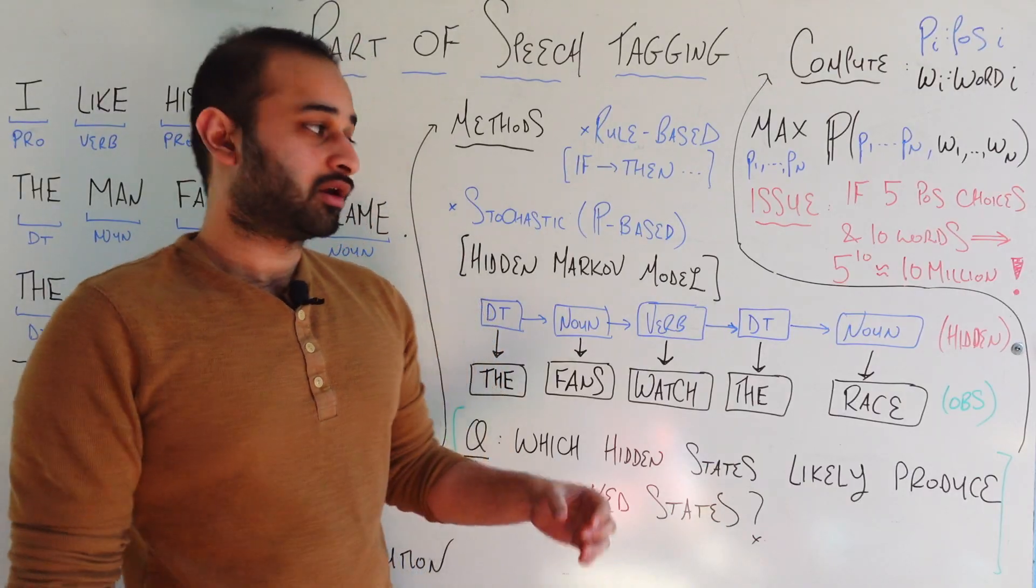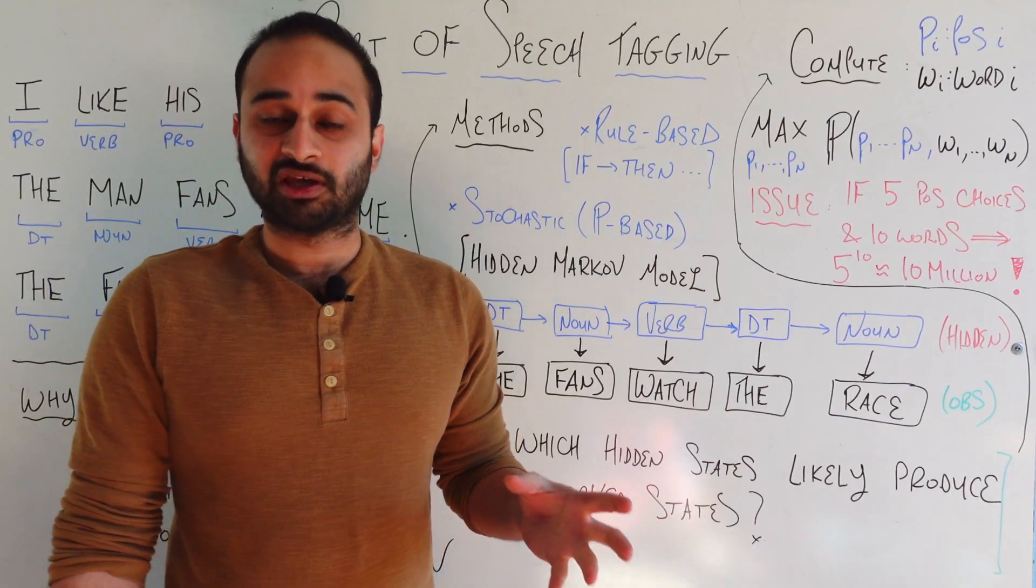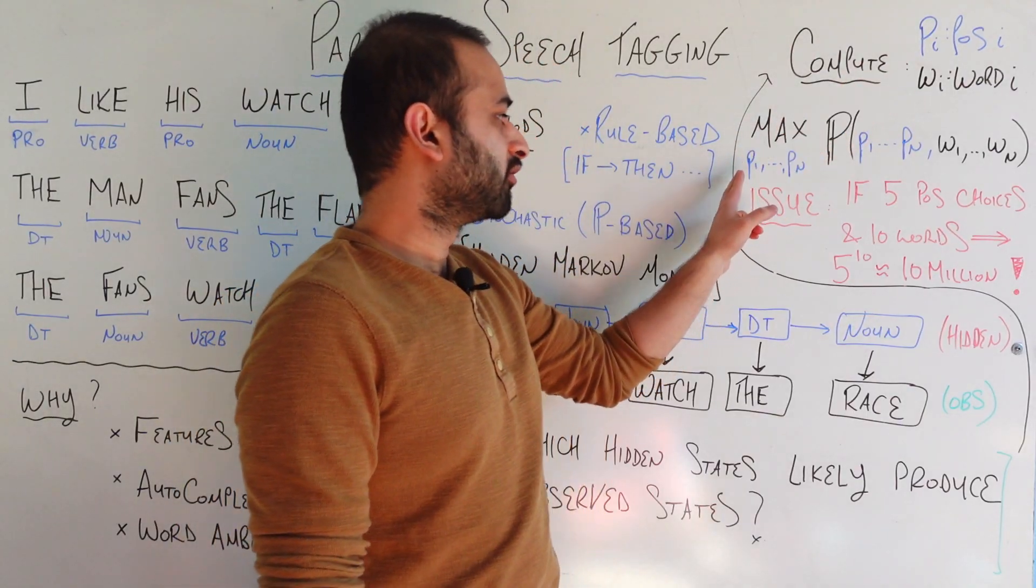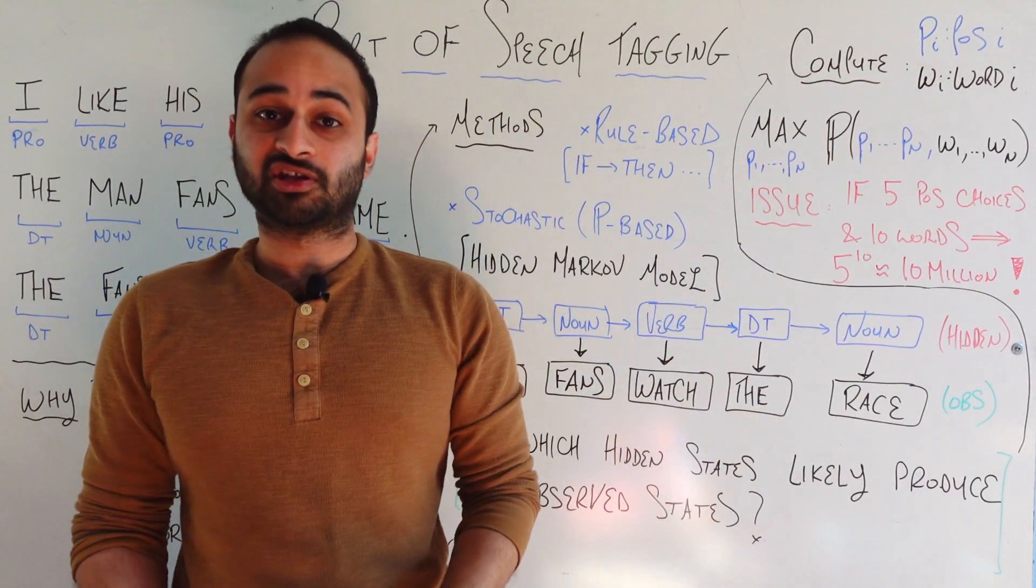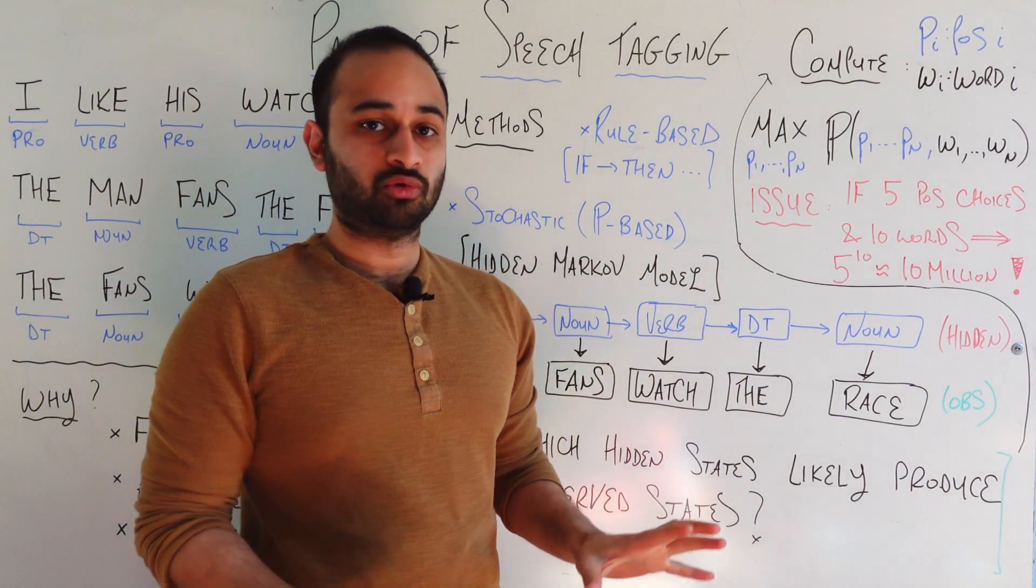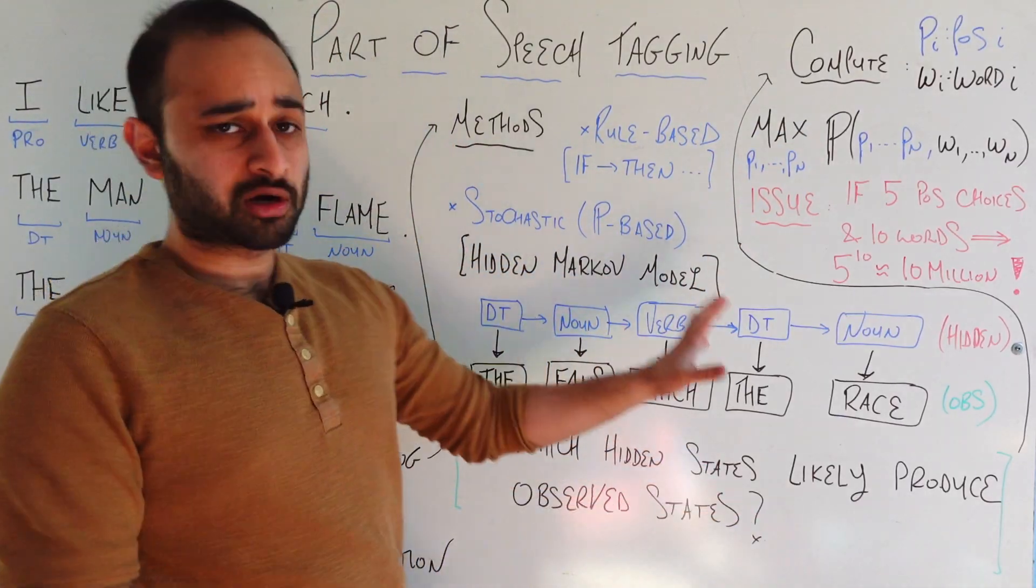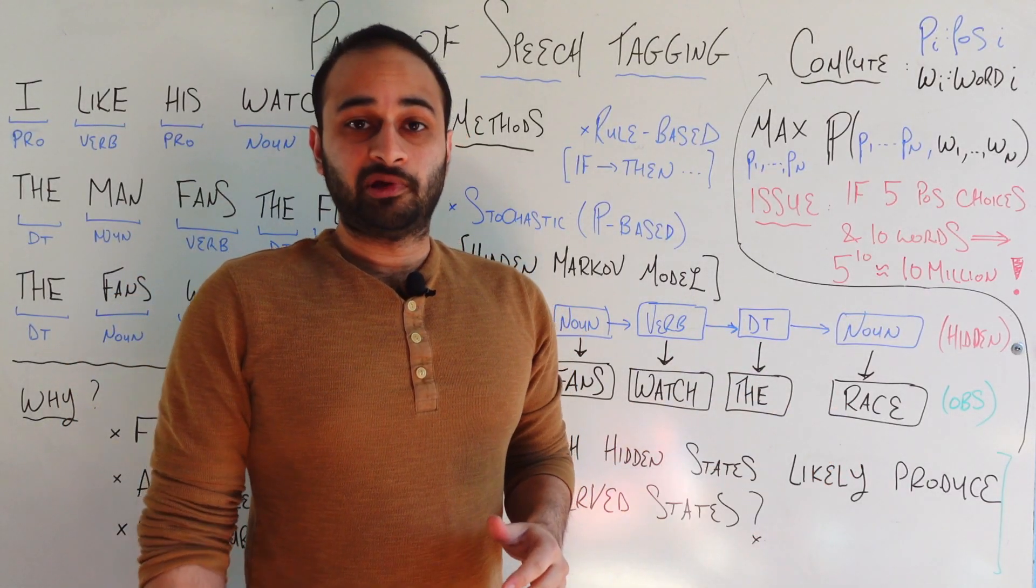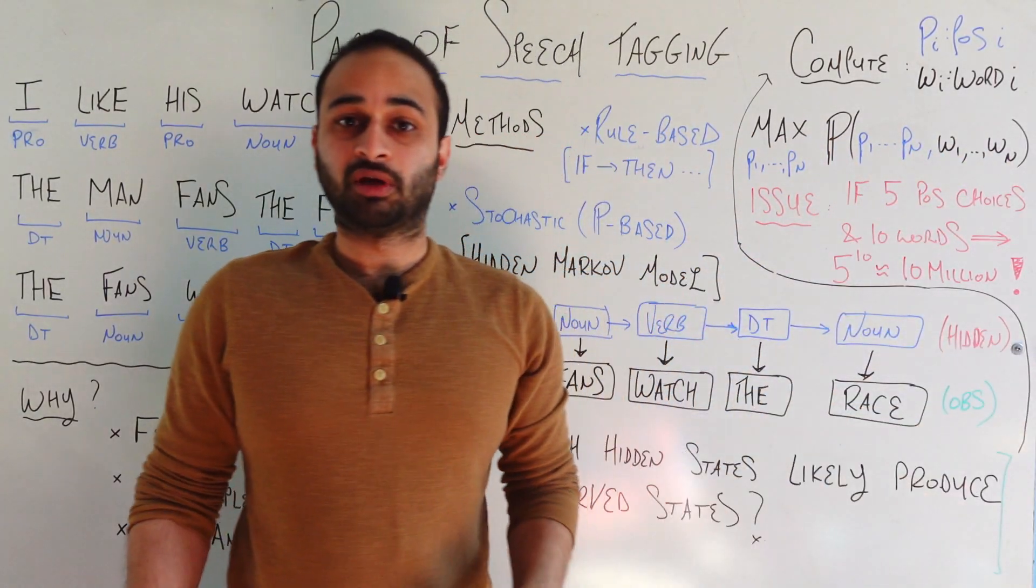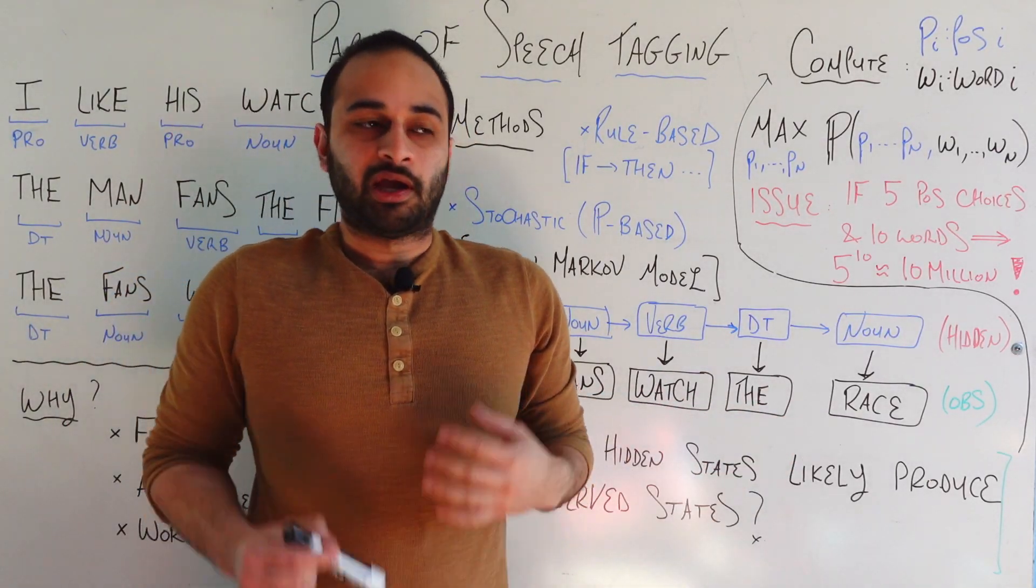And so if we have these emission probabilities and we have these transition probabilities and we have the final sentence, then we're in good shape. We can go ahead and run the hidden Markov model, which, as we saw in that video, amounts to maximizing a probability. Specifically, we're trying to find the parts of speech. So PI going from P1 to PN, where N is the number of words in your sentence. These are all the parts of speech, which are, again, hidden to us. So we're going to try every single one, every single setting of these parts of speech. And our goal is to maximize this quantity, which is the probability of jointly observing those parts of speech, whichever ones we've chosen, and the observed states. So W1 through WN are the literal words that we see on the page.